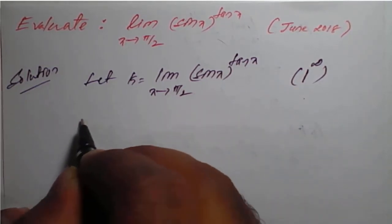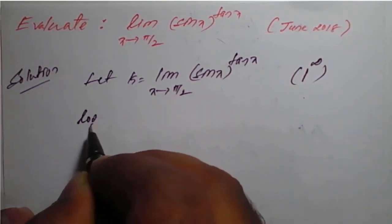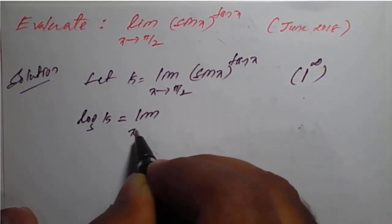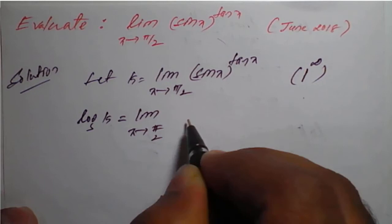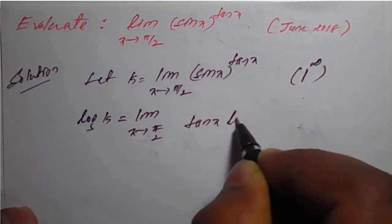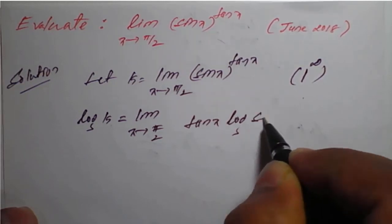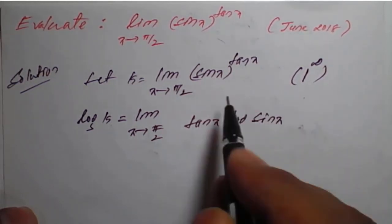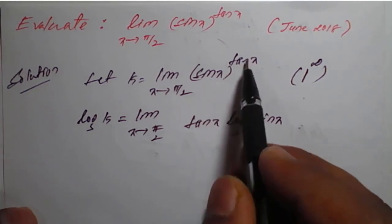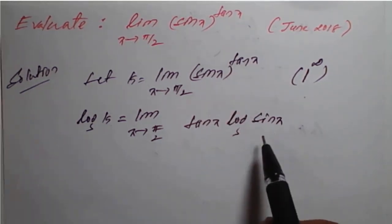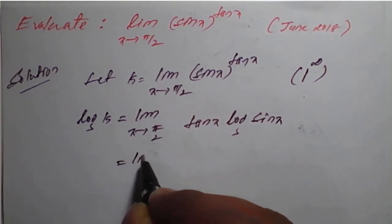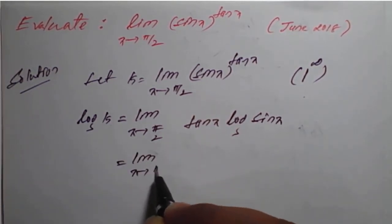Take log on both sides. So log(k) is equal to the limit as x tends to π/2 of tan(x) into log(sin(x)). Using the logarithm property, log of sin(x) raised to tan(x) can be written as tan(x) into log(sin(x)).